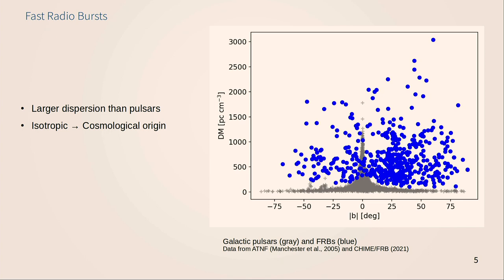What truly sets FRBs apart from other radio transients is the really high dispersion we see in them, compared with most galactic sources like pulsars. This plot shows galactic latitude on the x-axis — the height above or below the galactic plane. In the galactic plane there's a lot of material and plasma, so we expect high dispersion. Pulsars tend to be associated with the galactic disk, but all these blue dots are FRBs from the CHIME catalog that go to much higher dispersions and are spread across all galactic latitudes. From this, we can conclude they're coming from other galaxies, and since the distribution is mostly isotropic, it's most likely of cosmological origin.